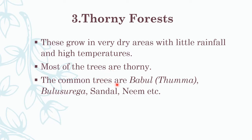The common trees are babble — babble means tumma, or tumma chetu as we say. We actually get gum from that tree. Babble tree, balusurega, sandal, neem, and even cactus — these types of trees we can find in thorny forests.